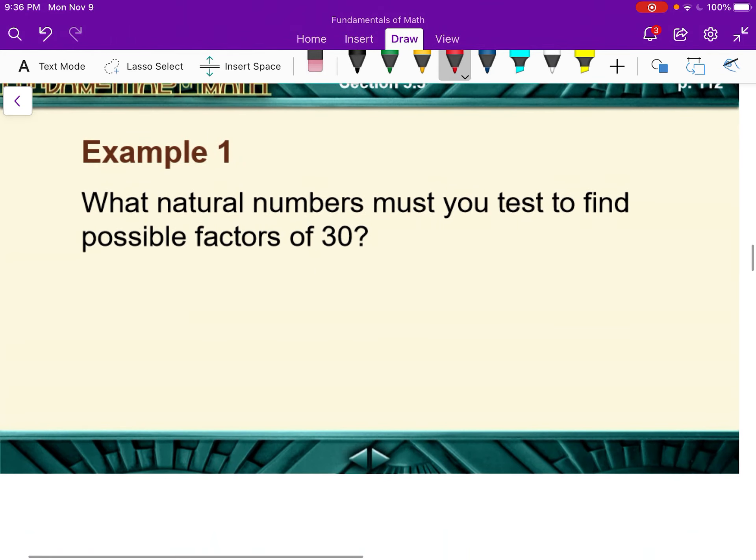So here we go. What natural numbers must you test to find possible factors of 30? Well, we would think the square root of 30, well we don't know that exactly, but the closest perfect square is the square root of 25. So we would only have to check up to 5 to find possible factors of 30.